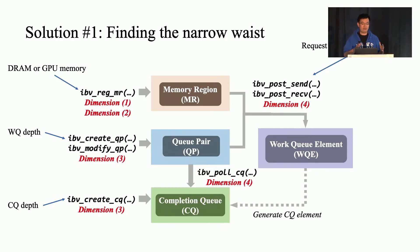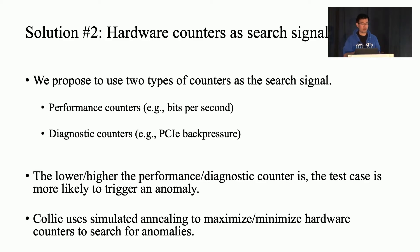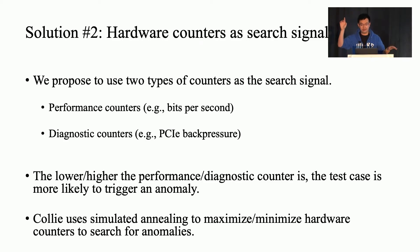Given such a space, we can test with various types of workloads to search for potential performance anomalies. For the efficiency challenge, our observation is that modern RDMA NICs provide two types of counters: performance counters such as bits per second or packets per second, and diagnostic counters such as back pressure or internal cache miss. These diagnostic counters are mapped to unexpected events inside RDMA subsystems. Therefore, we argue that the lower the performance counter or the higher the diagnostic counter, the more likely a test case is to trigger an anomaly. Given these counters as the search signal, we leverage optimization algorithms such as simulated annealing to efficiently search.